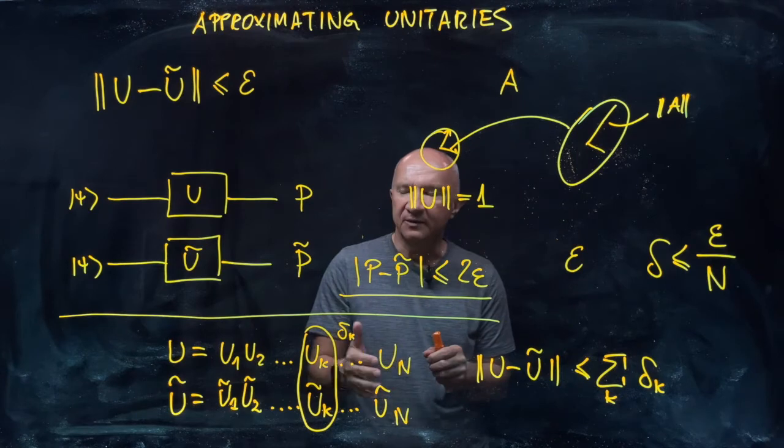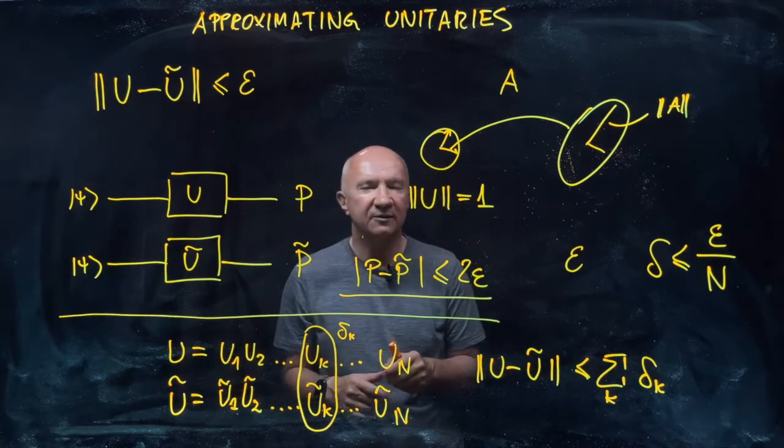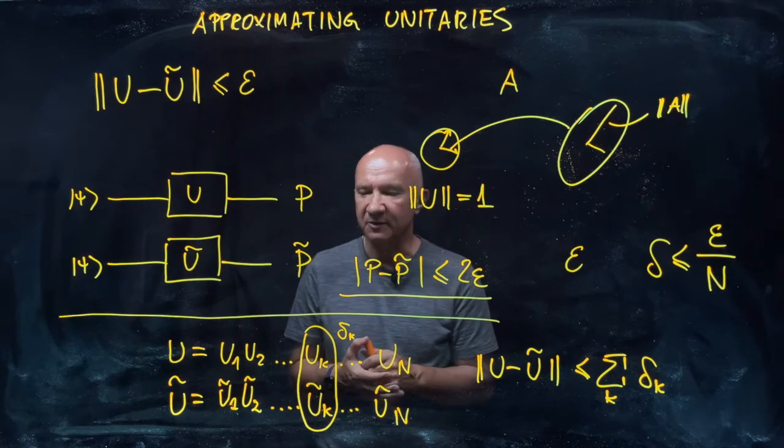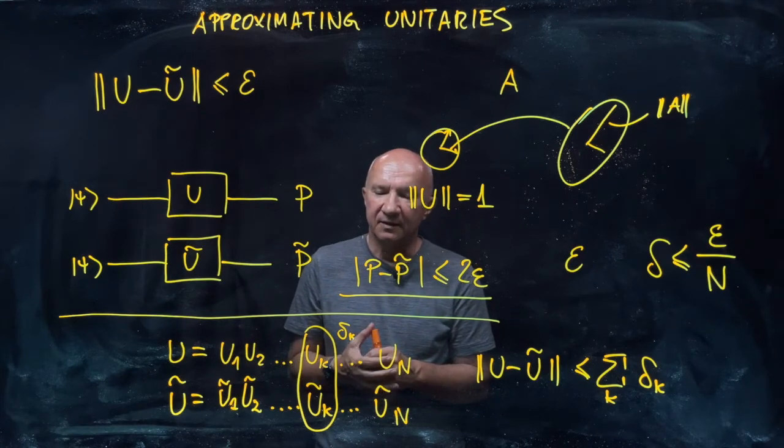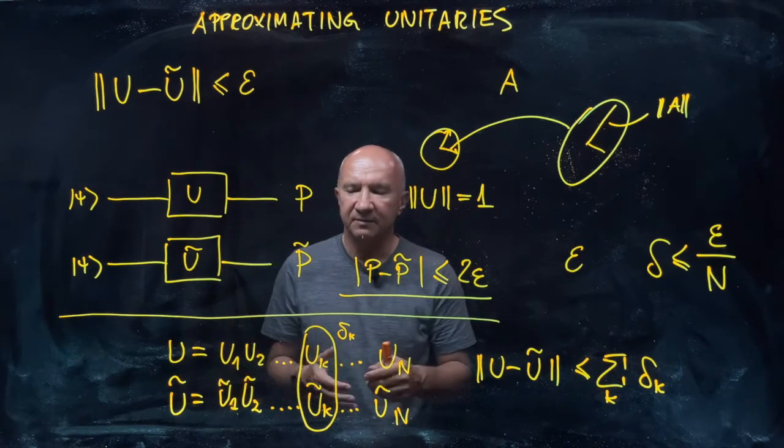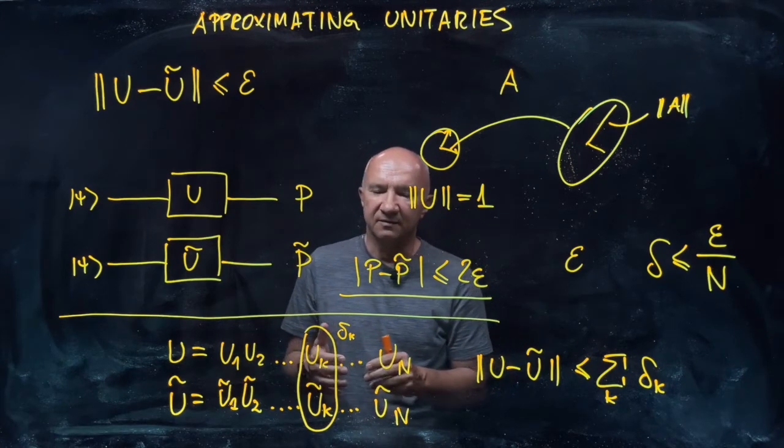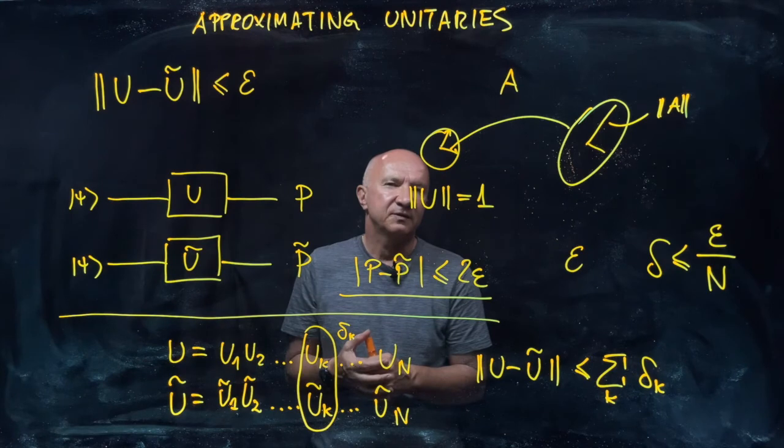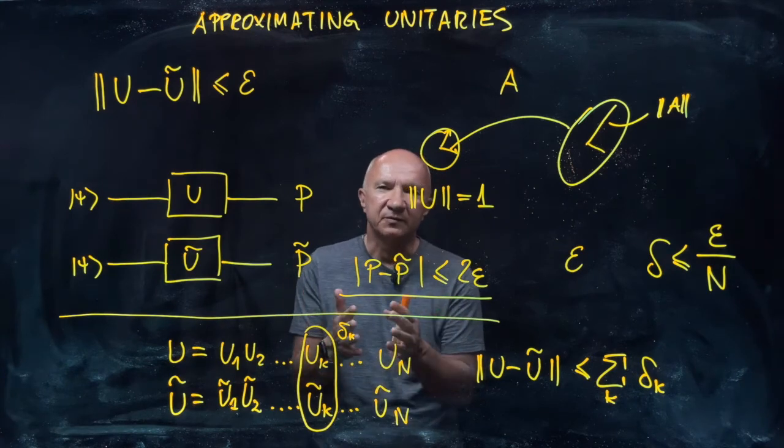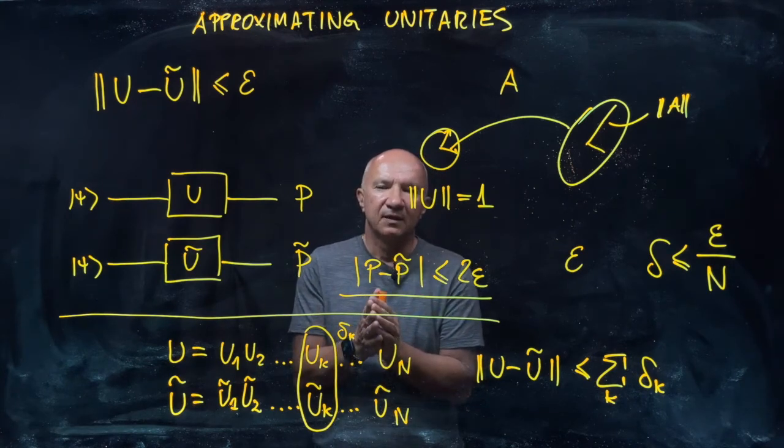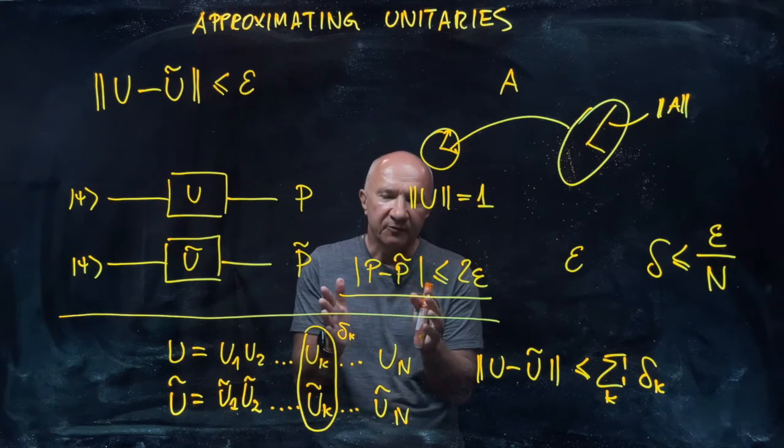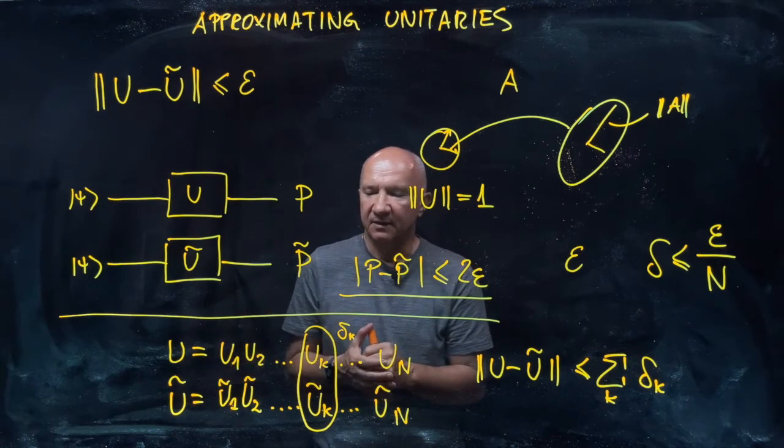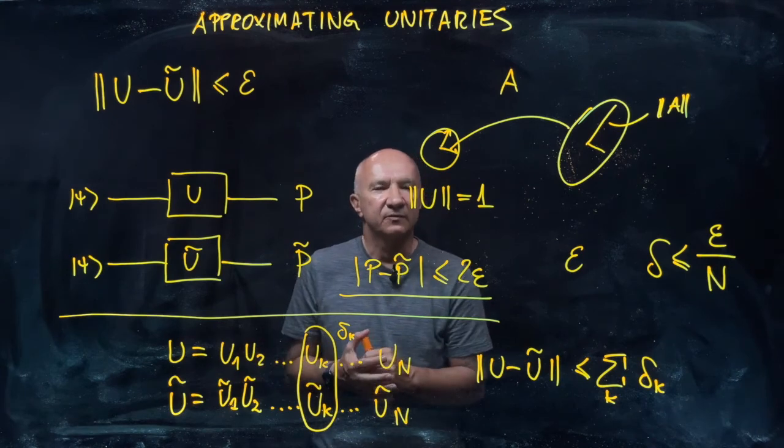So this is good news for quantum computing simply because if we want to implement a sequence of unitaries and each component cannot be precisely realized but only with a certain approximation, then a sequence of N gates that approximate N unitaries gives you a decent precision. The error will scale linearly with the size of the sequence here, which is good.